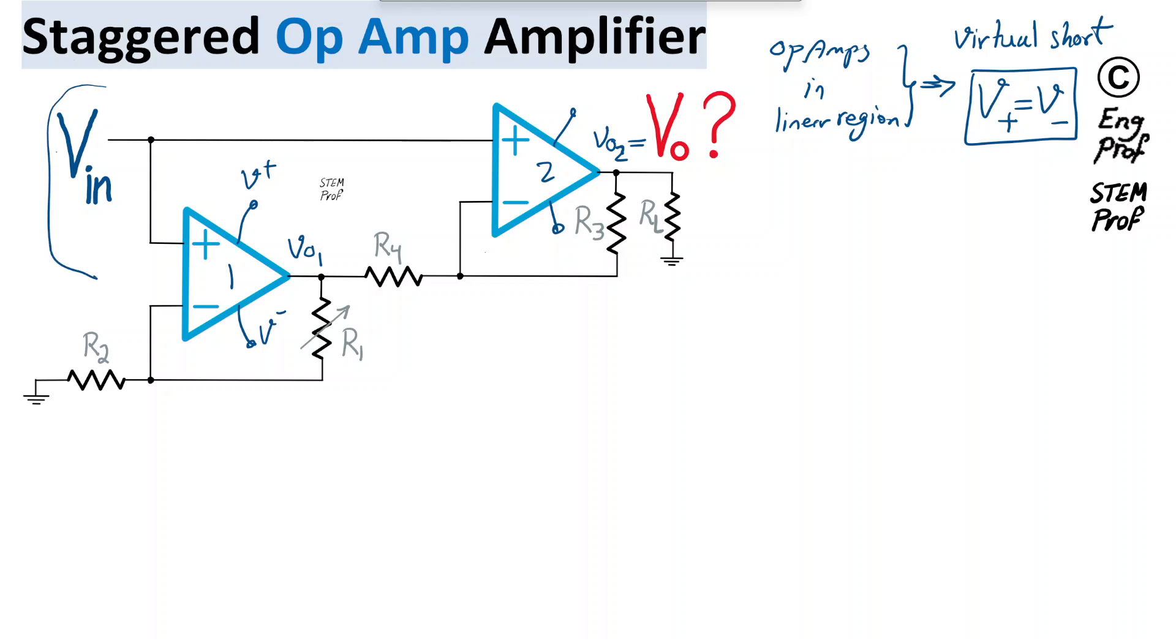V-in is applied at the positive terminal here for op-amp 1. Therefore, V-in has to be present at this node, which is the negative terminal for op-amp 1. Therefore, we can find the current I1 very quickly, which is I1 equal to the voltage drop across R2, which is simply V-in, so V-in divided by R2.